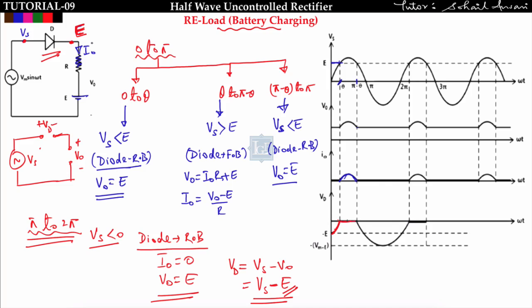From theta to pi minus theta the diode is conducting — short circuited — so we get no voltage across the diode. After pi minus theta to 2pi, current is zero and diode is open circuited, so diode voltage equals Vs minus V_naught. Subtracting the V_naught waveform from Vs gives the diode voltage waveform, and the peak inverse voltage comes out to be Vm plus E.